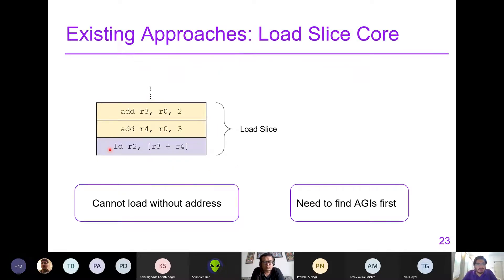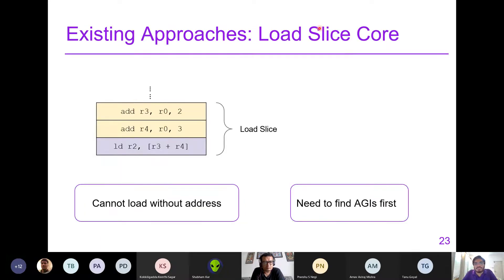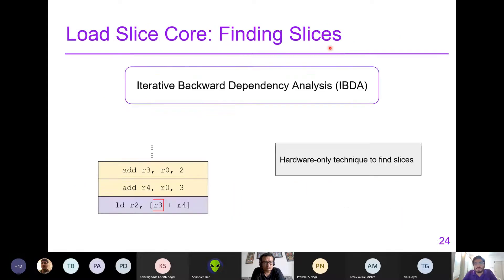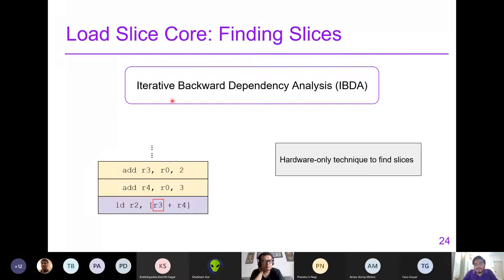We need to find these address generating instructions first. This approach was first presented in the Load Slice Core paper, proposed back in 2015. They propose an iterative backward dependency analysis (IBDA) technique to find these address generating instructions directly in hardware. Before that, the compiler or programmer had to manually tag these as address generating instructions. This hardware-only technique finds slices automatically.